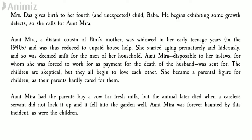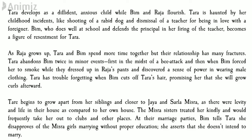Aunt Mira came to Mr. and Mrs. Das's family and there she found some peace, as all four children loved her a lot. Aunt Mira convinced Mr. and Mrs. Das to get a cow. Sadly, a servant forgot to tie the cow up and the cow fell into the well and died — this incident particularly tormented Aunt Mira and the children. During the early days, both Vimla and Raja were very promising, Tara was quite timid and lacking confidence, and Baba — the youngest and mentally retarded — was under the special guidance of Aunt Mira.